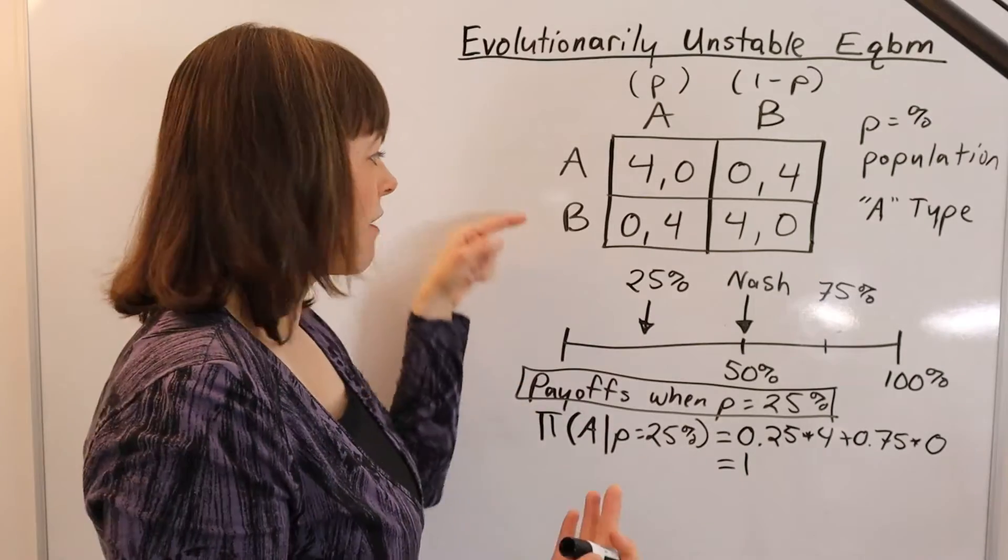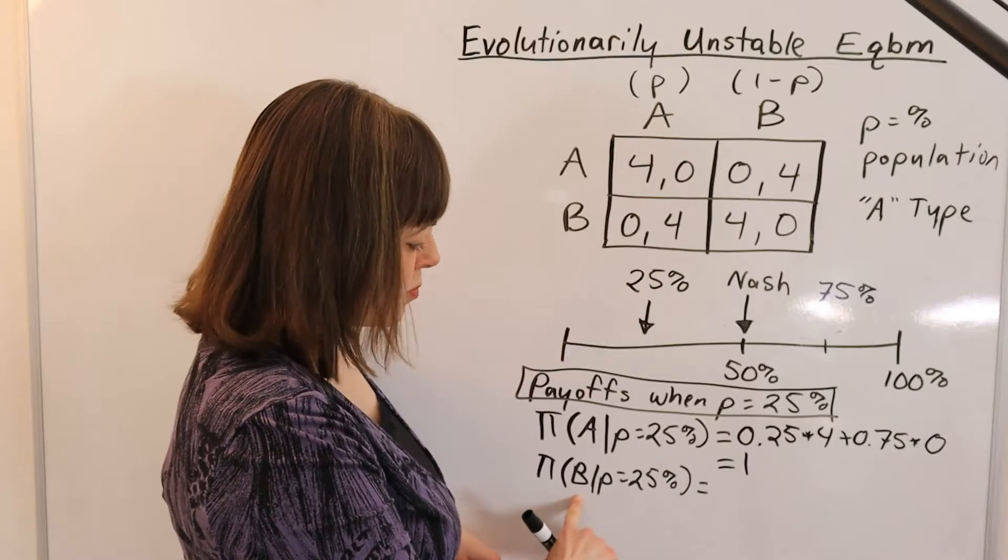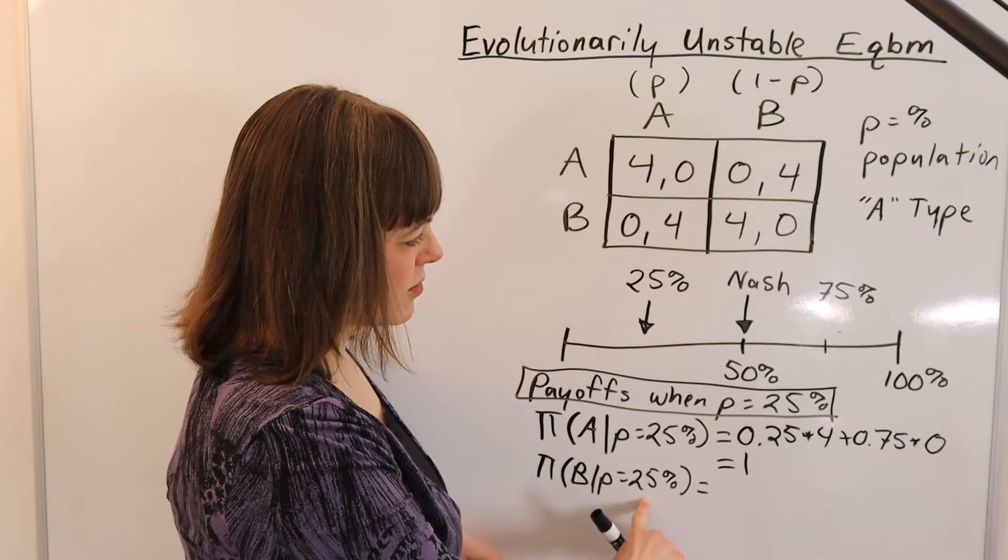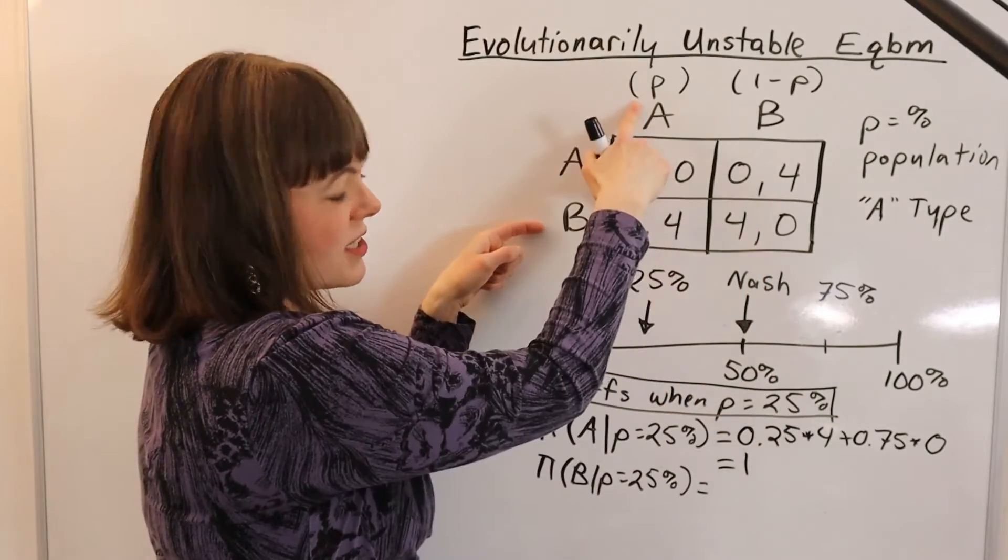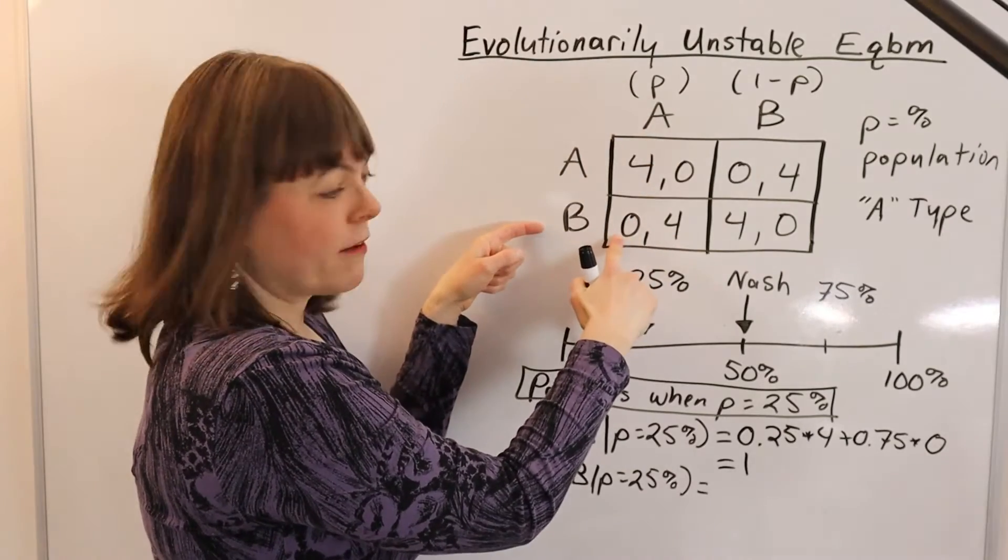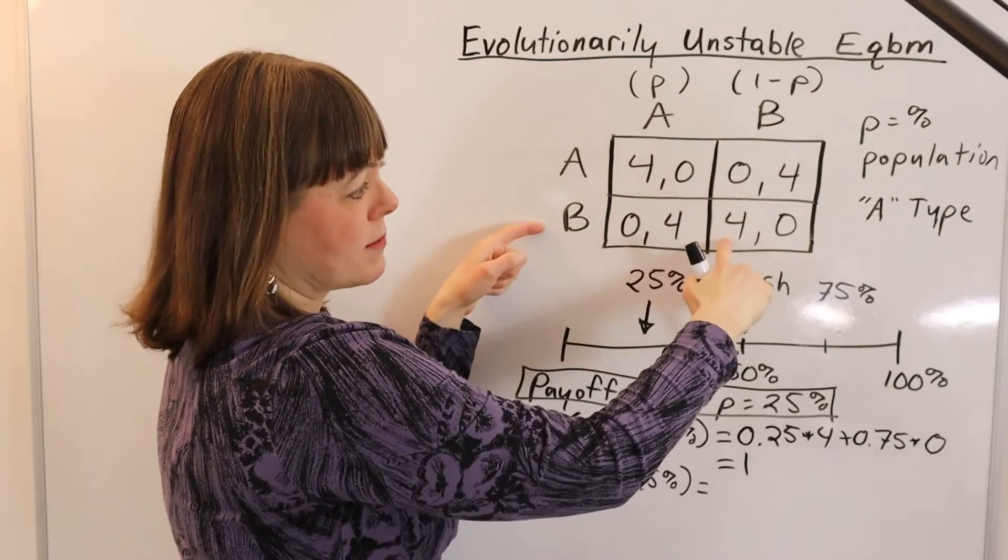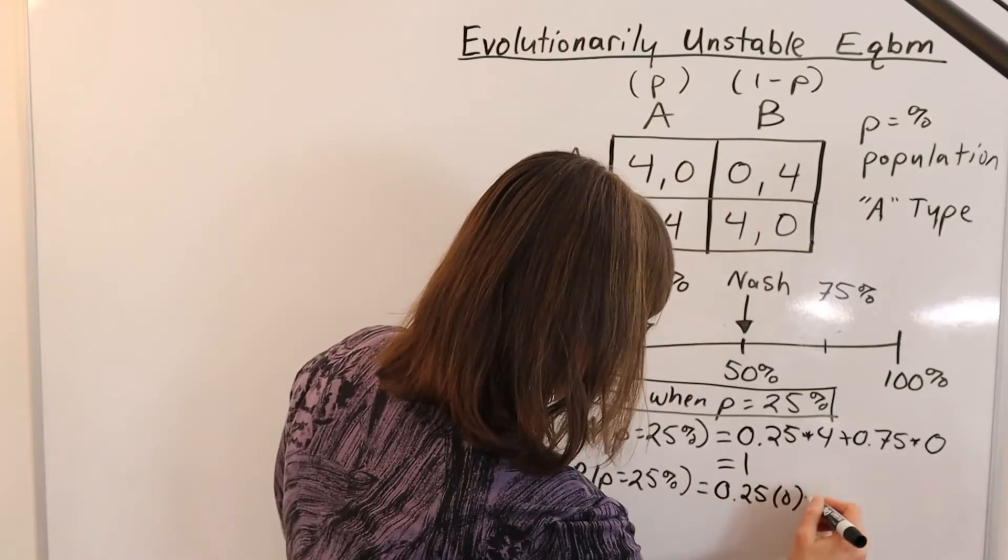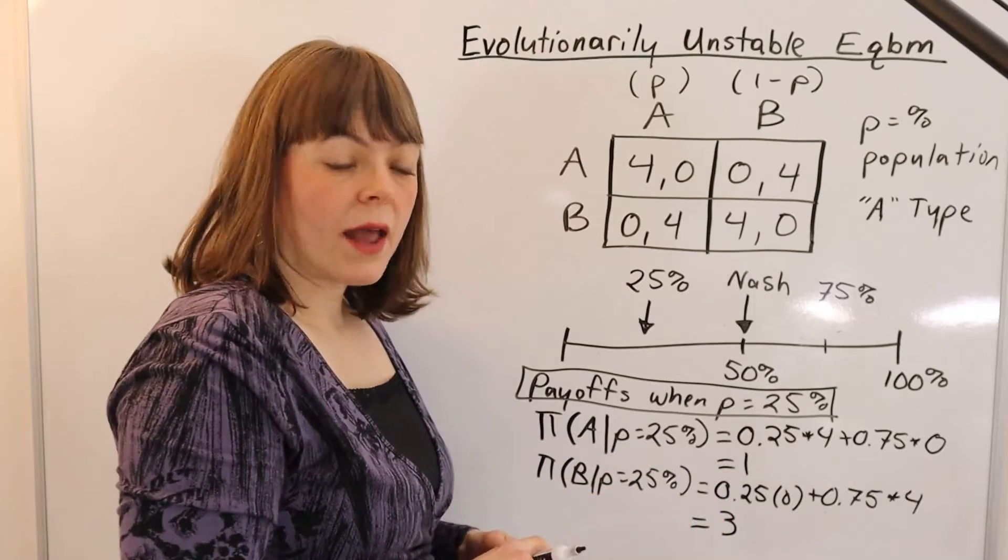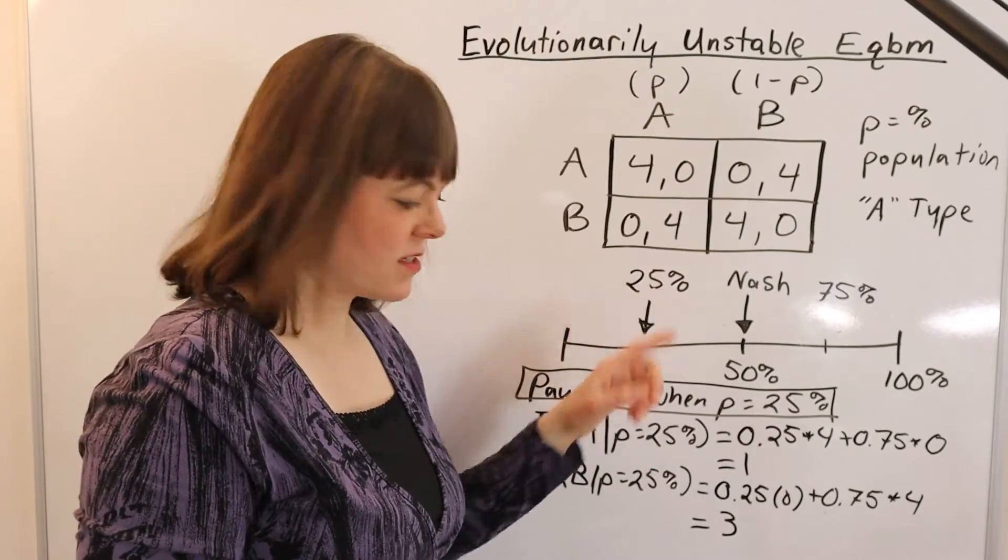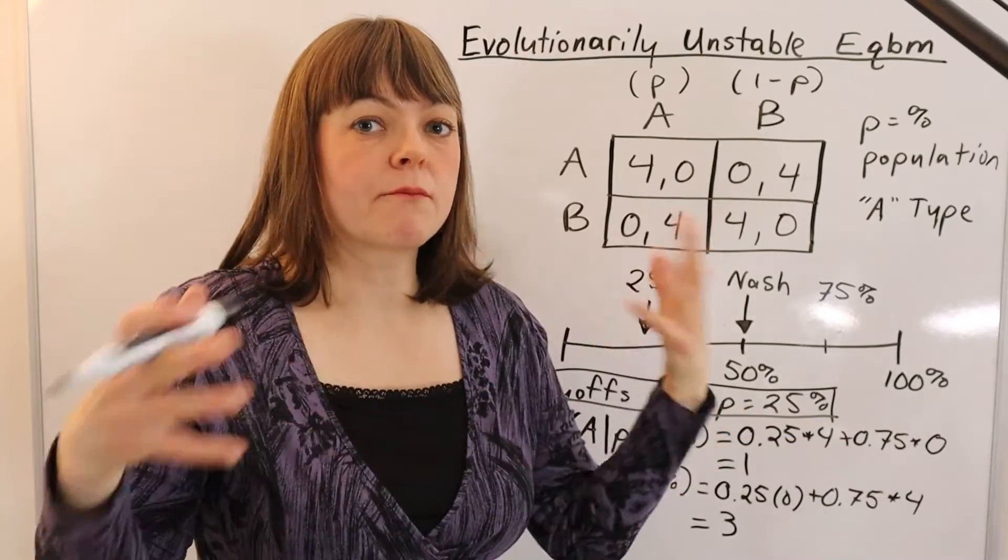And we want to compare this to the expected payoff of the B type in this situation. That's the payoff to player B given that P equals 25% in this hypothetical scenario. That payoff to B is going to be equal to the percentage of the population that's A type times your payoff if you encounter an A type, plus the percentage of the population that's a B type, that's 75%, times your payoff if you encounter a B type. So the payoff to the B players is 3, the payoff to the A players is 1. And what this means is if we're at 25%, the Bs have an advantage and therefore the population will evolve to have more and more Bs.